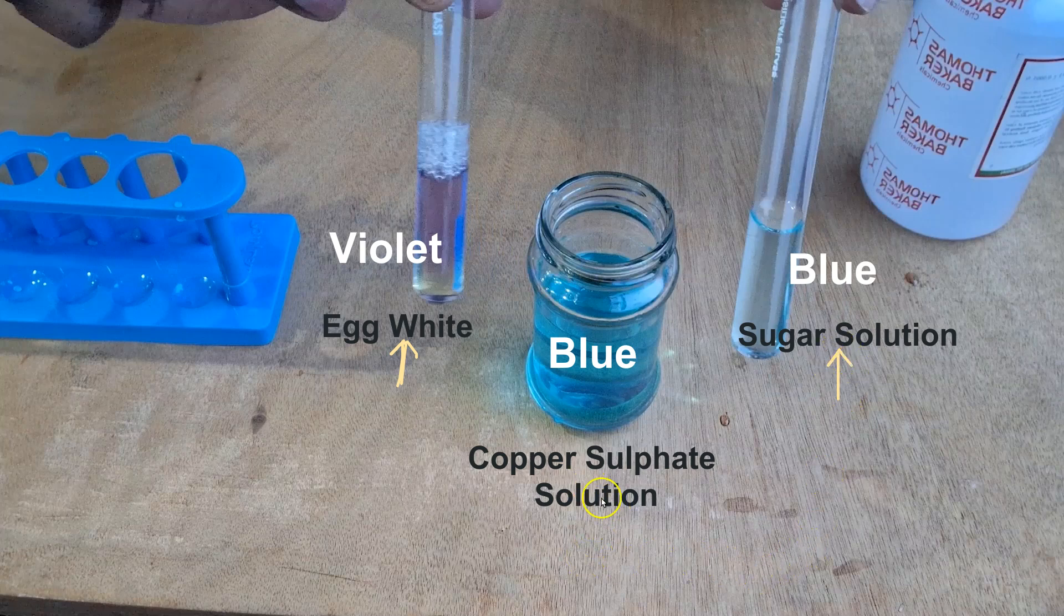The copper sulfate solution is also blue. You'll notice that the sugar solution just looks like a diluted version of the copper sulfate solution, whereas the egg white is a totally new color.